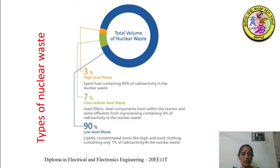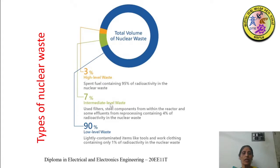So, 90% of the total volume is low level waste, but it contains only 1% radioactivity. The radioactivity is present mainly in the tools and work clothing used. Next is intermediate level waste — shown in green — that is 7% of the total volume of the nuclear waste. It includes used filters, steel components from within the reactor, and some effluents from reprocessing, and contains 4% radioactivity.